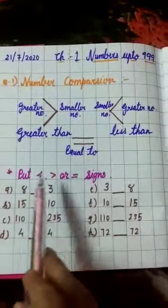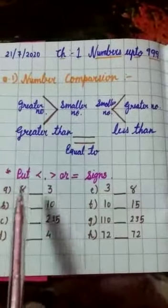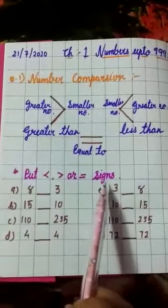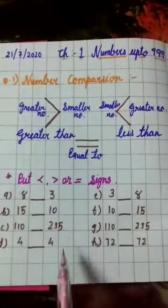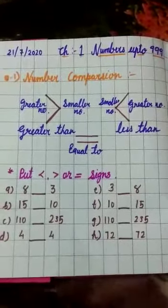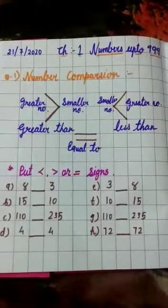After that, leave one line. In the margin, make a star and write both less than, greater than, or equal to signs. You have to write here, 8 fill in the blanks. You have to write down answers by yourself.